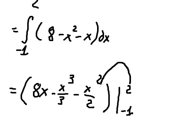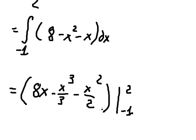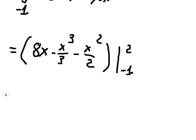We get the expression with coefficient five. We put positive two in here and negative one in here, and we get the final answer of 39 over two. Subtracting negative four gives us four. That is the end, thank you for watching.